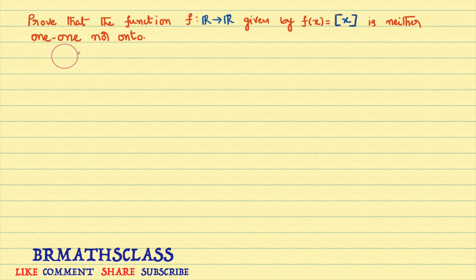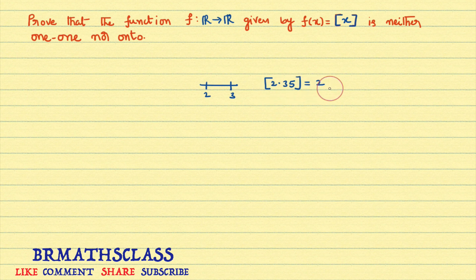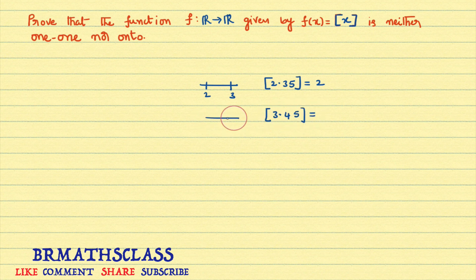Before starting the solution, let me quickly recall how we get greatest integer function values. For example, step(2.35): since 2.35 lies between 2 and 3, the left-hand side number is 2, so step(2.35) = 2. Similarly, step(3.45): since 3.45 lies between 3 and 4, step(3.45) = 3.